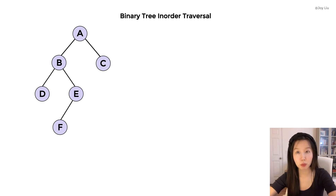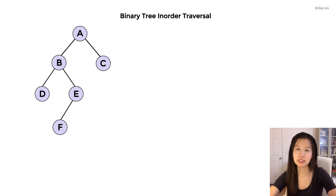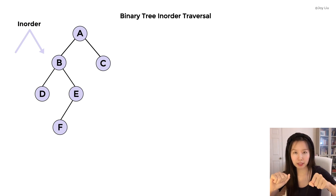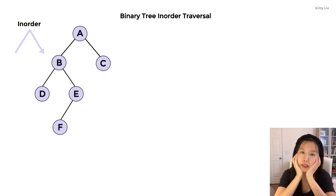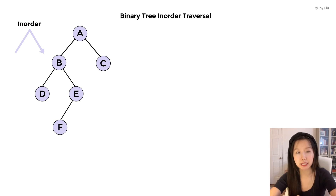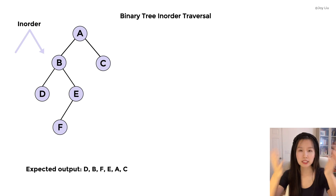This is a tree that we are going to traverse. There are six nodes: A, B, C, D, E, F. Since it's in-order traversal, the output order should be from left to top to right. I'll leave this visualization here for you to refer to if needed. What output do we expect to see? You can pause to come up with the expected output. It should be D, B, F, E, A, C. This is only for us to verify the correctness of the algorithm.